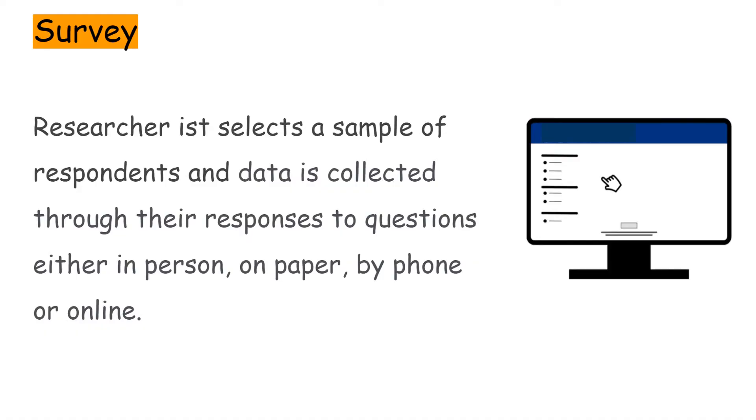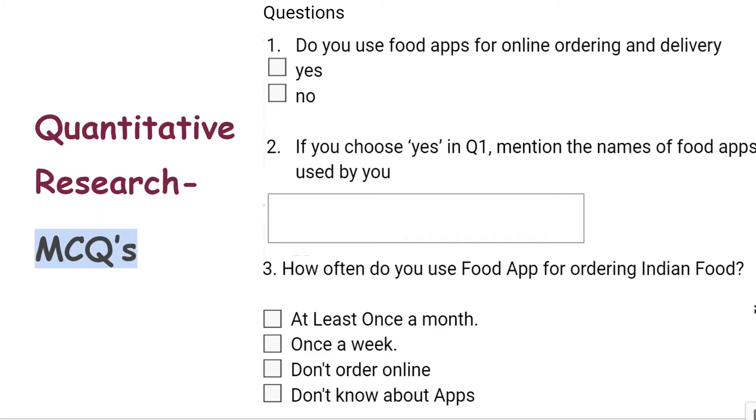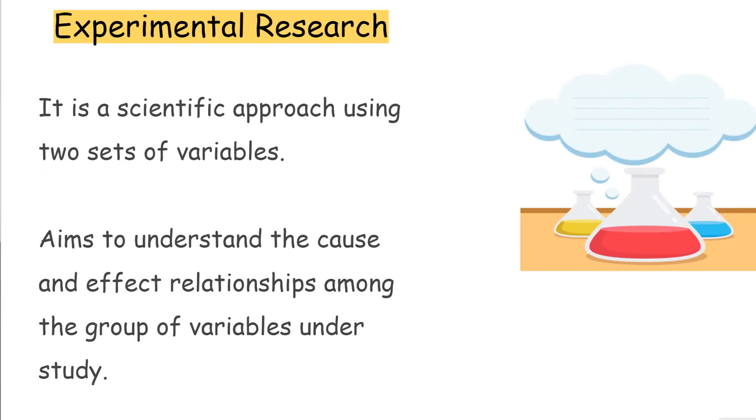There are three key methods of conducting quantitative research. Starting with surveys, in surveys the researcher first selects a sample of respondents and data is then collected from them through questions either in person or paper or by phone or online. In quantitative research, closed-ended questions are asked.